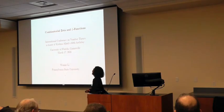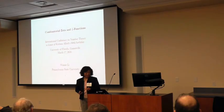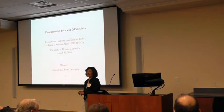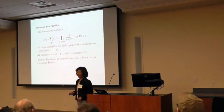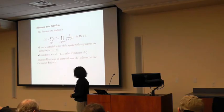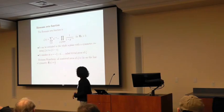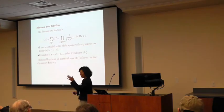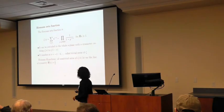Zeta and L-functions have played a very fundamental role in number theory. Today I will talk about zeta functions in the setting of the Ihara zeta function. We heard from this morning's talk about many properties of the Riemann zeta function. In particular, after analytically continuing the zeta function to the whole complex plane, it has trivial zeros at the negative even integers. The famous Riemann hypothesis says that all non-trivial zeros are expected to lie on the line of symmetry, that is the real part of s equals one-half.